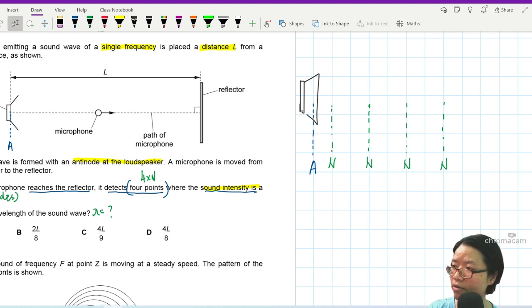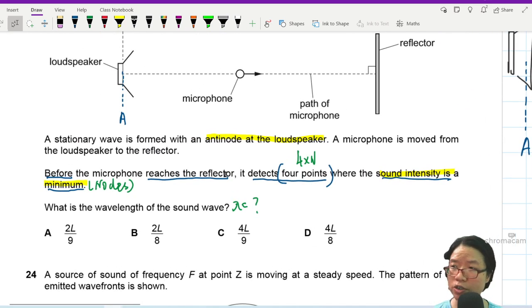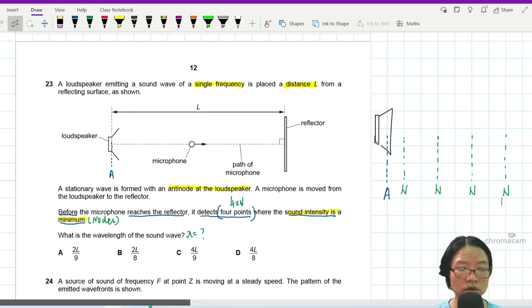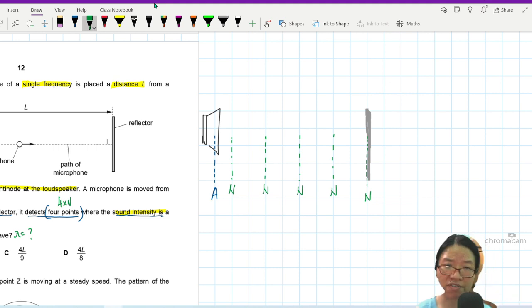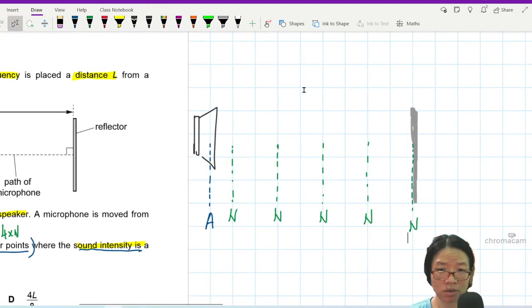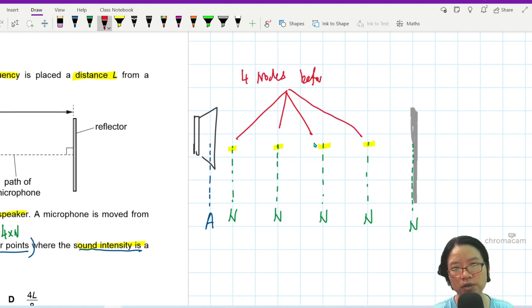But my question is, what happens at the reflector? Do you think the reflector there will be a node or an anti-node? You haven't reached the reflector yet, because if you read this statement, before the microphone reaches the reflector. So it hasn't reached the reflector yet. So the reflector is probably somewhere here. This is your reflector. So this point here will be another node because you are colliding with a hard surface.